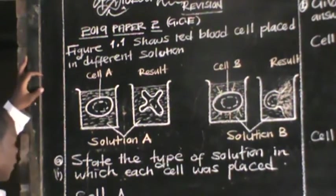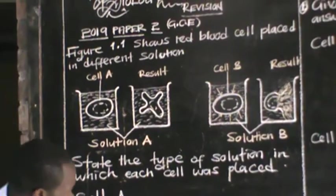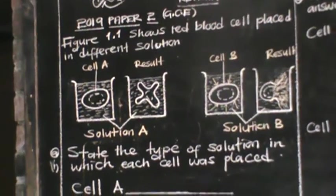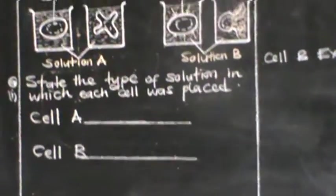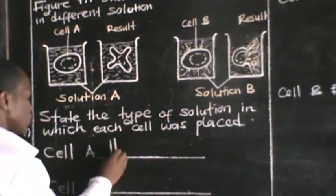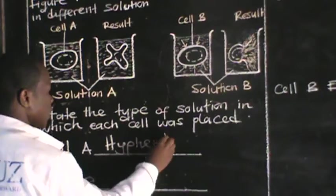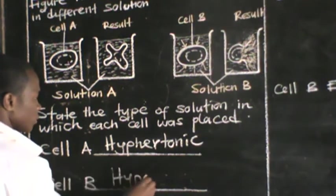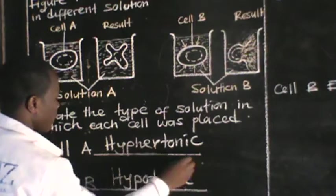The question asks us to state the type of solution in which each cell was placed. Looking at the result of cell A, we can say that cell A was placed in what we call a hypertonic solution. Cell B was placed in what we call a hypotonic solution.